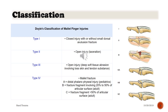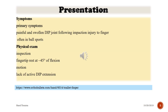Doyle's classification is very important for mallet finger. It includes Type 1, Type 2, Type 3, and Type 4. Symptoms include a painful and swollen DIP joint following an impaction injury of the finger.